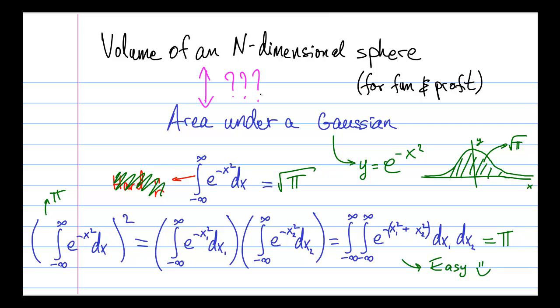So what does any of this have to do with the volume of an n-dimensional sphere? Well, the trick that I just showed you involved going to 2 dimensions to work out this expression. But you could also go to 3 dimensions, or 4 dimensions, or n dimensions. And so it turns out that when you go to n dimensions, the volume of an n-dimensional sphere becomes very relevant.